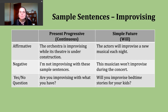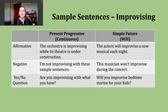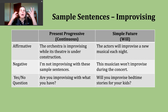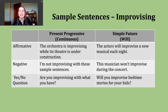Let's take a look at an example sentence: the orchestra is improvising while its theater is under construction. So here, they might be coming up with new ideas or new places to hold concerts because they can't hold it in their normal place.